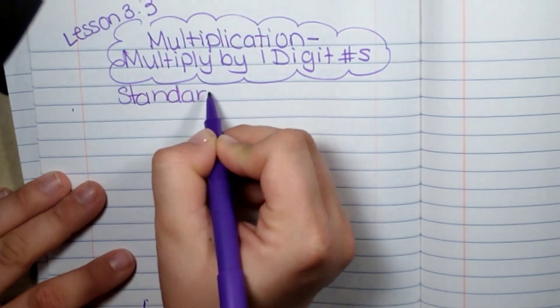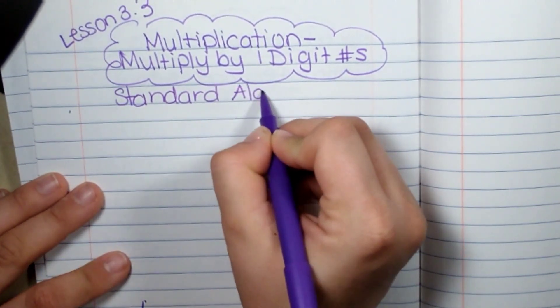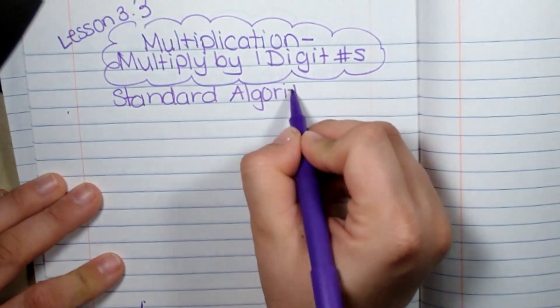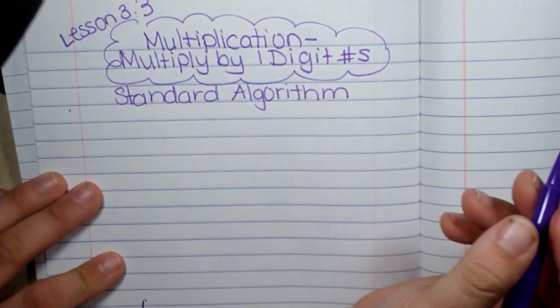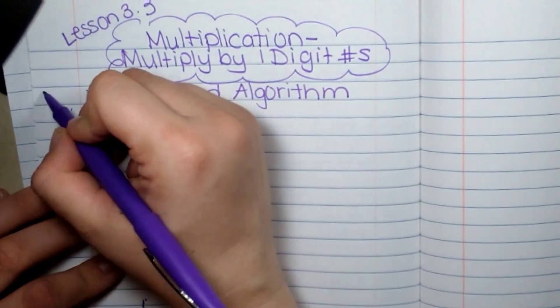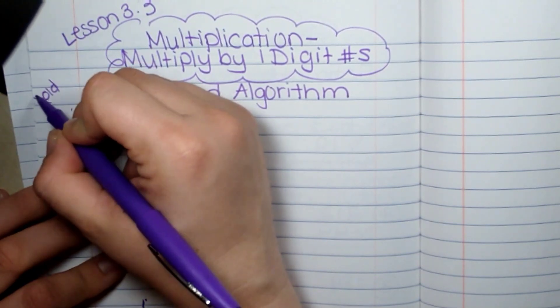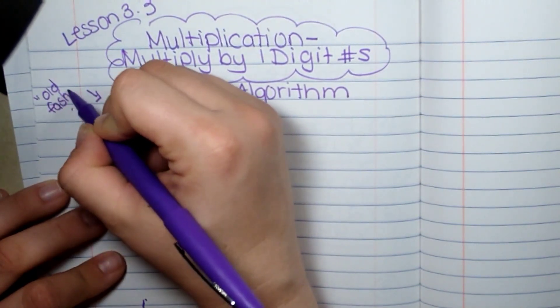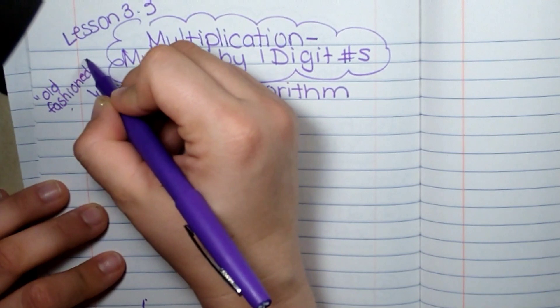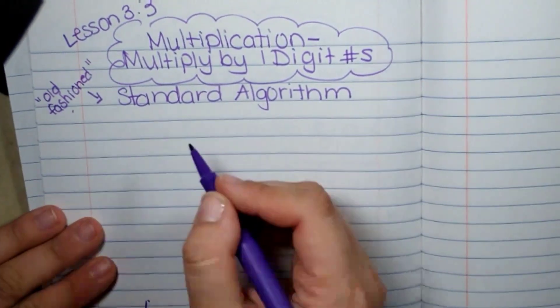In other words, when mom and dad say, I didn't learn it this way, this is how we learned it in school. This is the old fashioned way. When mom and dad say, back in my day, we did it this way. This is what they're talking about.